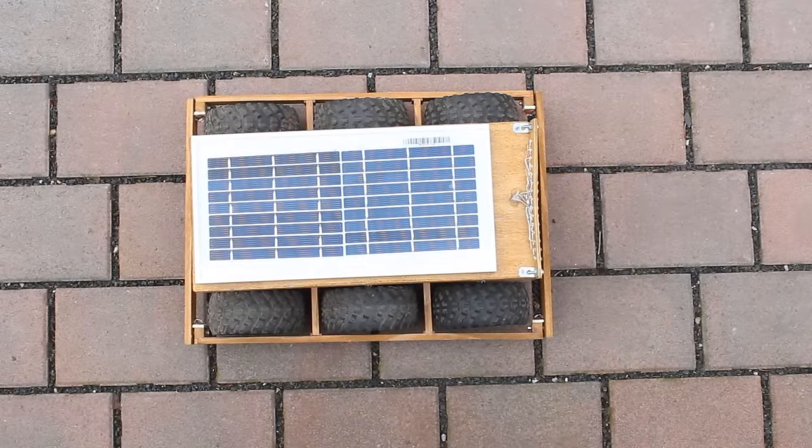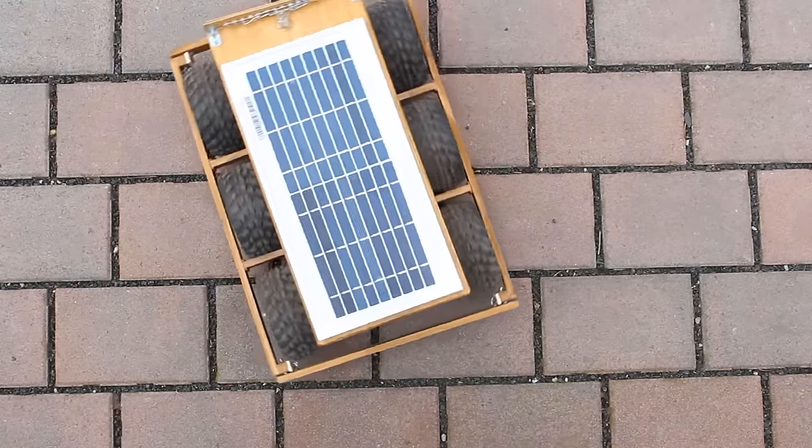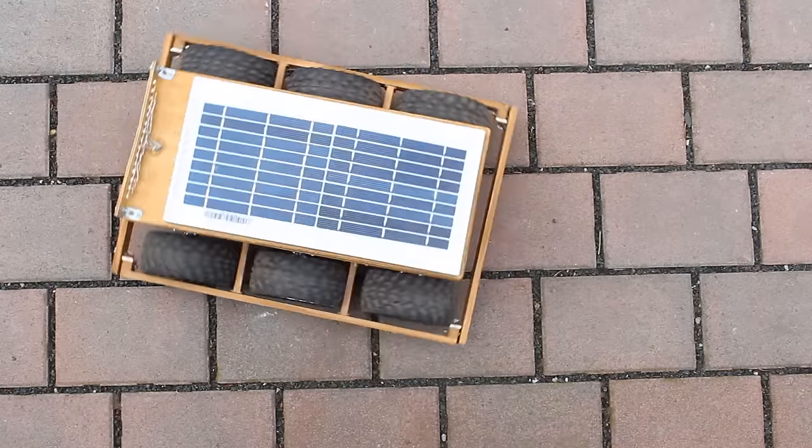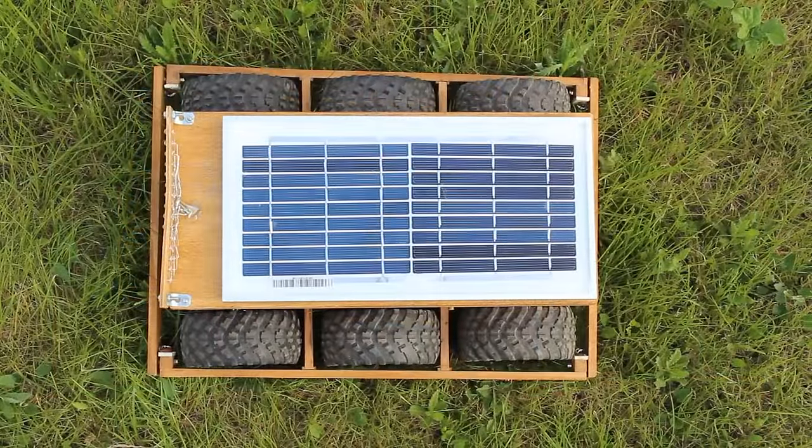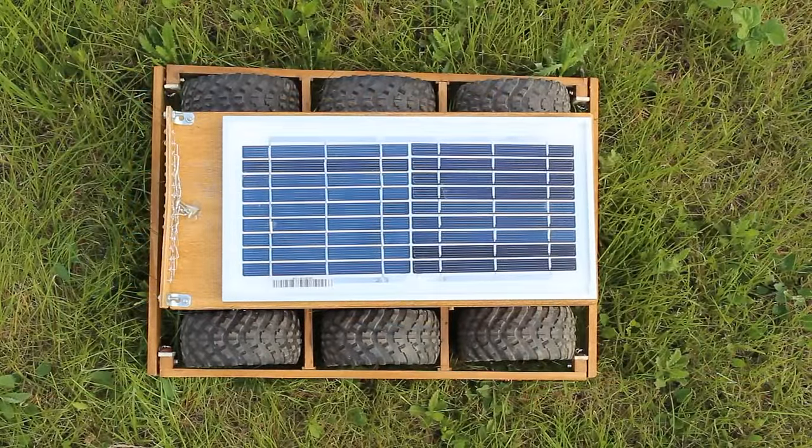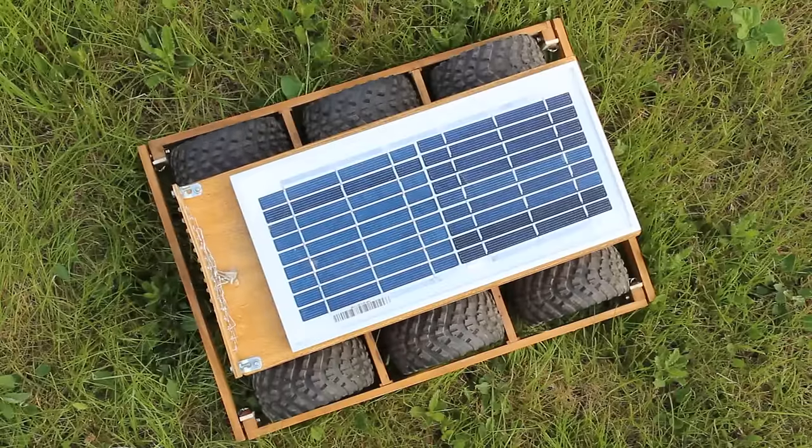You can also switch the motors of both sides fully on with different directions by what the robot turns on the spot. A drawback of that method becomes obvious in grass, the motors get nearly stalled while the robot turns extremely slow.